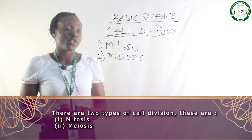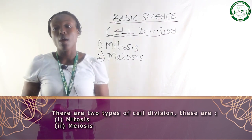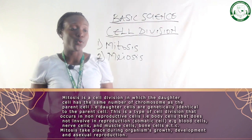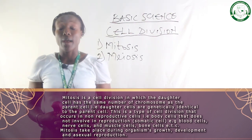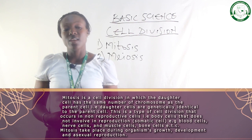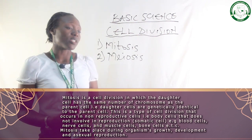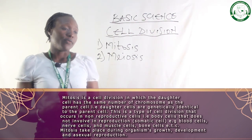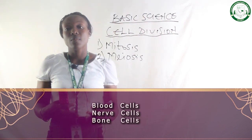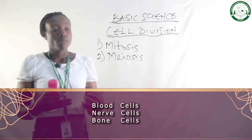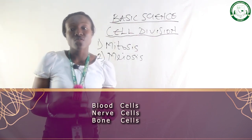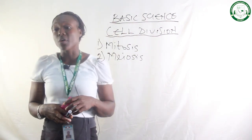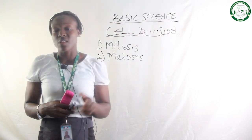Mitosis is the type of cell division that occurs in non-reproductive cells, also called somatic cells. For example, blood cells, nerve cells, bone cells, and muscle cells. So every other cell in the body system, aside from reproductive cells, mitosis takes place in them.